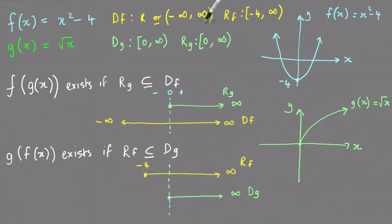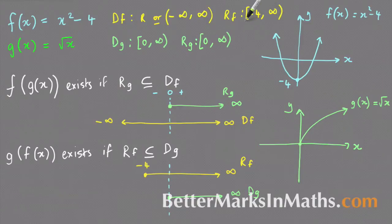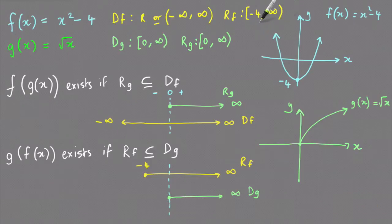The range of this function: the lowest y value is minus 4, and both ends of the parabola head up to positive infinity. So minus 4 is included in the square bracket and up to positive infinity round bracket, and again that's interval notation. So there's the domain and range of f.